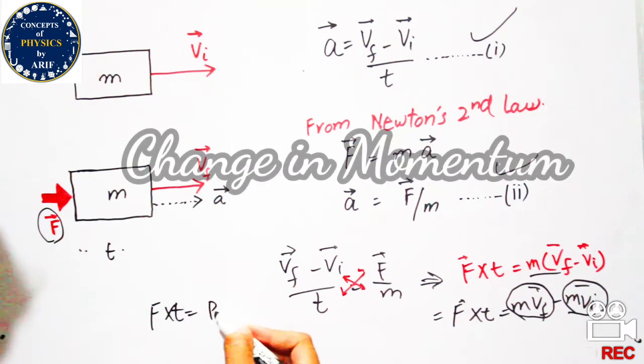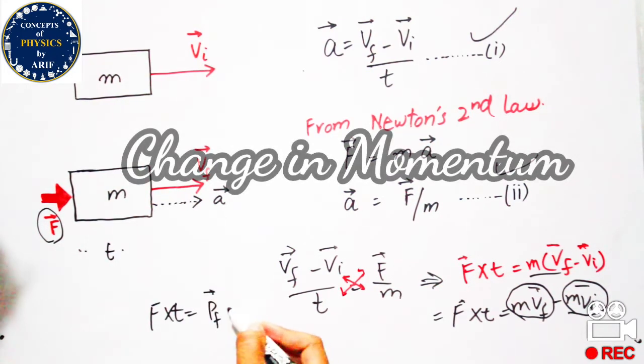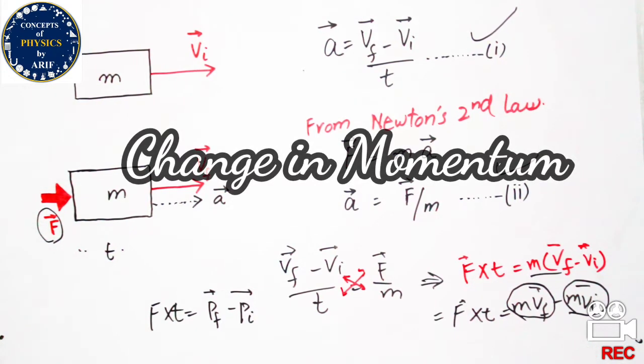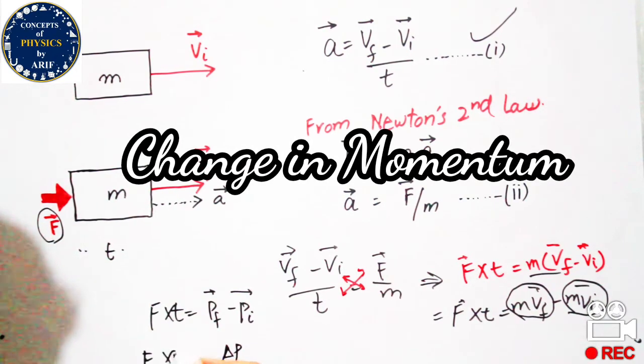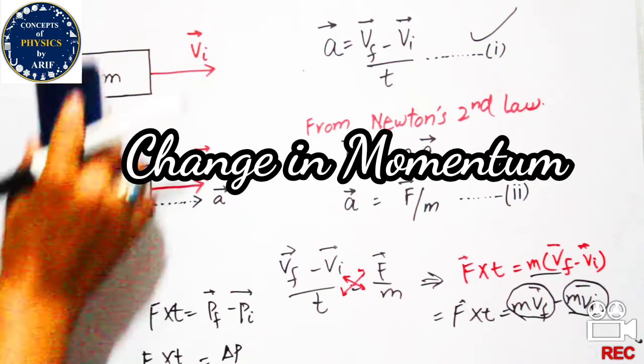This is final momentum pf minus initial momentum pi, and we can say that F×t is the change in momentum.